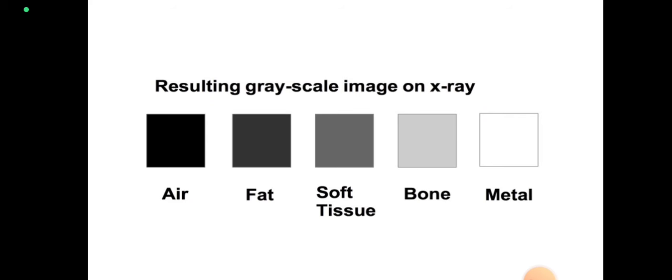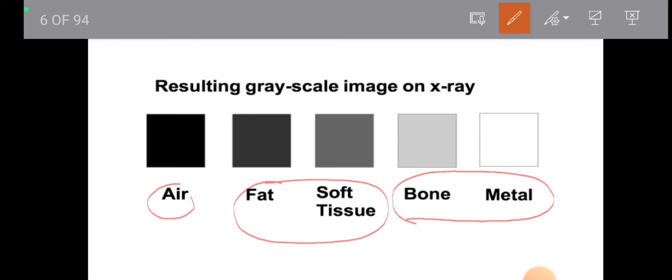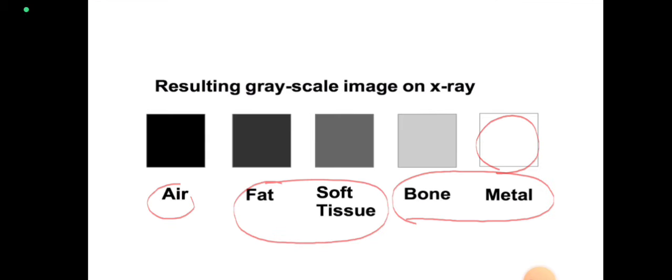Here is the resulting grayscale image on x-ray: air will appear as a dark or black structure, fat and soft tissue will appear as shades of gray, bone will appear as a white shadow, and metal will appear more whitish than bone due to high density. You can easily differentiate air, fat, soft tissue, bone, and metal as per density — high density means more absorption, less density means less absorption.